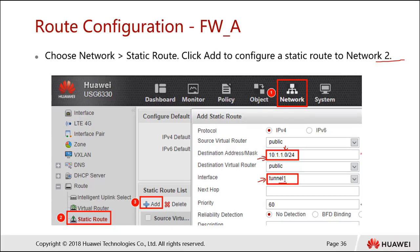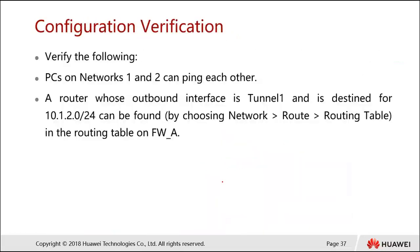From Firewall B's perspective, the opposite applies: traffic destined for Network 1 (10.1.1.0) is also routed into tunnel 1. The interface names can be the same on both sides since they are only significant to the individual firewall. To verify the configuration, perform a ping test from a PC in Network 1 to Network 2 to confirm connectivity, and check the routing table on Firewall A to confirm a route with outbound interface tunnel 1 pointing to 10.1.2.0.